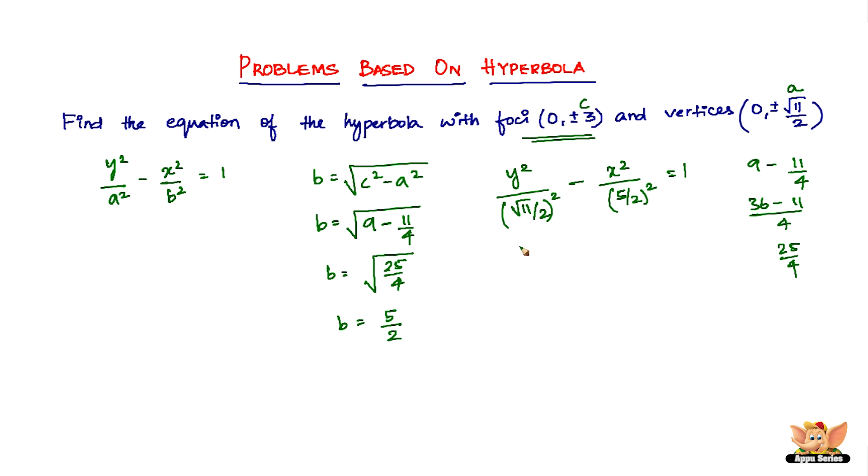Which of course is y²/(11/4) - x²/(25/4) = 1. So now writing this in the form of a simpler equation, all we have to do is 4y²/11 - 4x²/25 = 1.